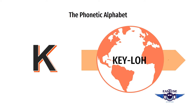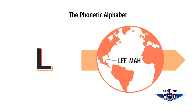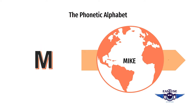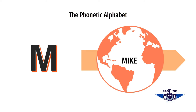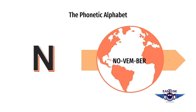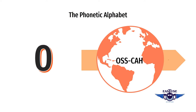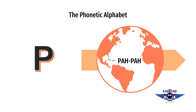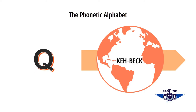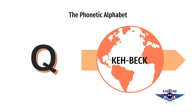K is for Kilo. Kilo. L is for Lima. Lima. M is for Mike. Mike. N is for November. November. O is for Oscar. Oscar. P is for Papua. Papua. Q is for Quebec. Quebec.